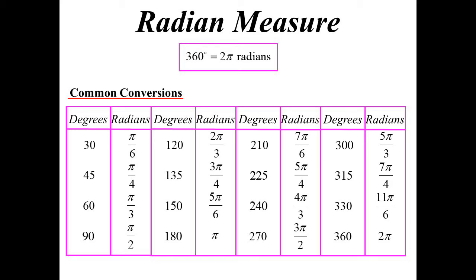300, 5 pi on 3, 315, 7 pi on 4, 330, 11 pi on 6, 360, and we're back to our 2 pi.